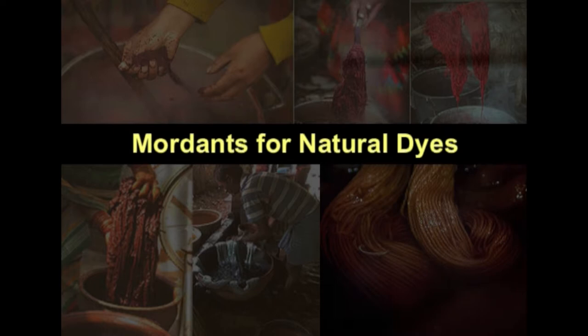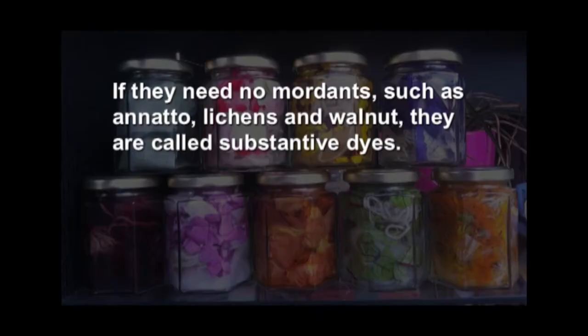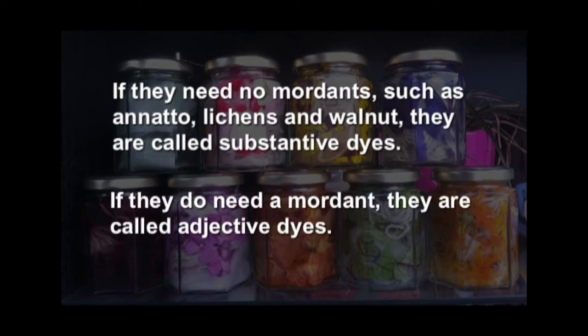Without mordants, we cannot dye, especially cottons and other cellulosic fibers. A mordant is an element which aids the chemical reaction that takes place between the dye and the fiber so that the dye is absorbed by the fabric. Containers used for dyeing must be non-reactive — enamel or stainless steel — otherwise the metal will be taken up by the fabric and genuine colors will not result. Brass, copper, or iron pots can be used for mordanting. Not all dyes need mordants; those requiring no mordant, such as annatto, lichens, and walnut, are called substantive dyes. Those that do need a mordant are called adjective dyes.